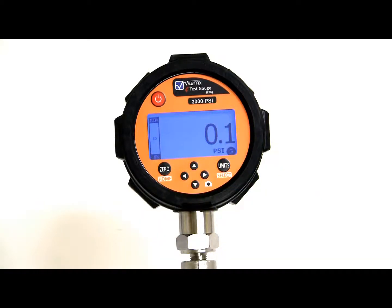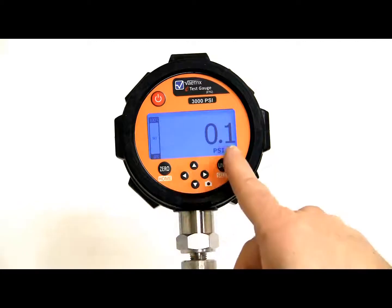So right now, we're in measure mode, you're measuring live pressure. We have the bar graph, which tells you where you're at per the range, so we're at 0 psi on a 3,000 psi gauge, and we have the units.